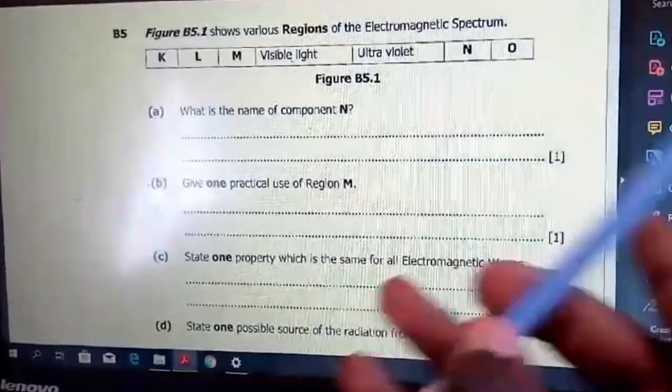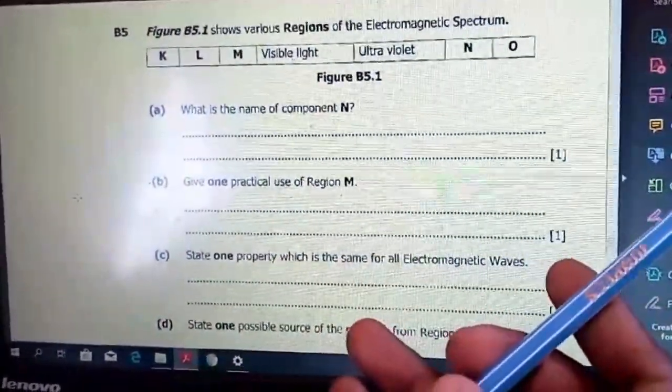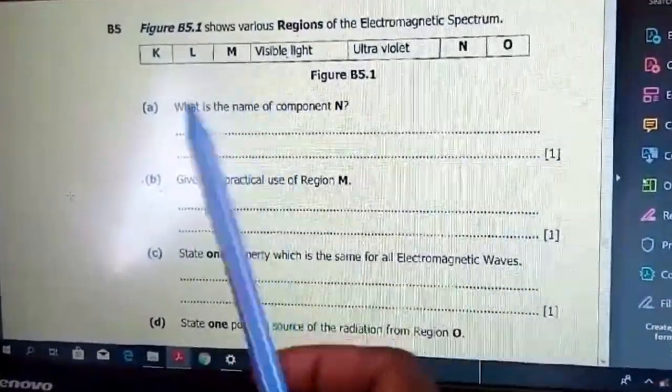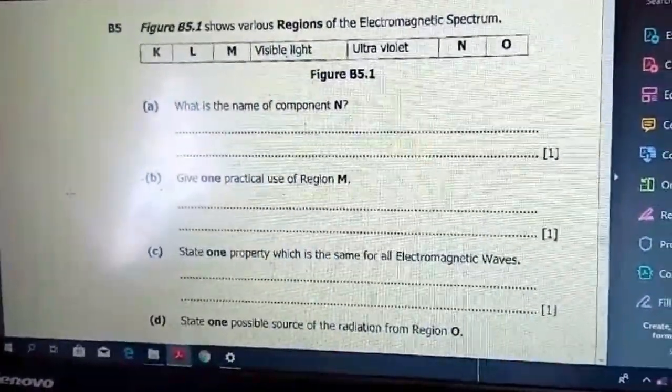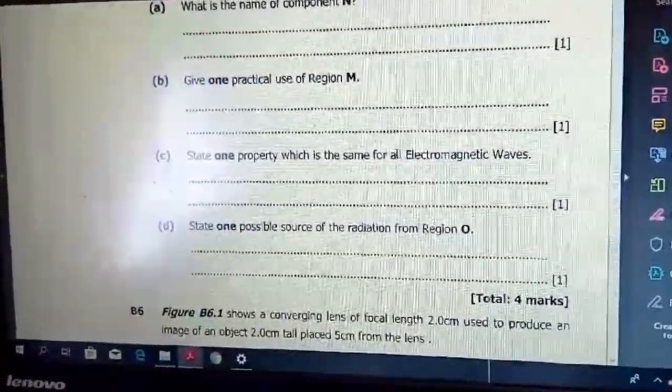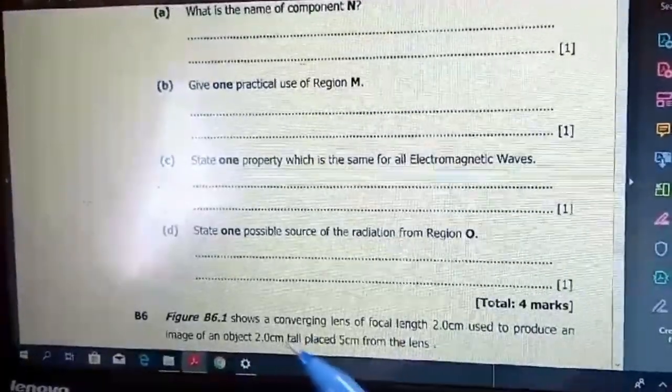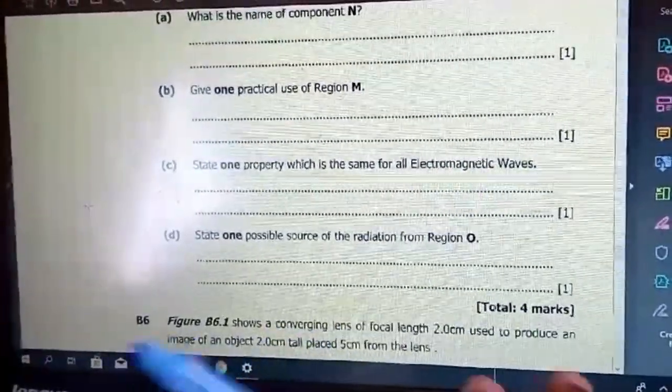Those are some of the uses, but you can just say in heat-sensitive thermal imaging cameras or night vision cameras. State one property which is the same for all electromagnetic waves. All electromagnetic waves have the same speed, which is the speed of light, 3.0 times 10 to the power 8 meters per second or 300 million meters per second.